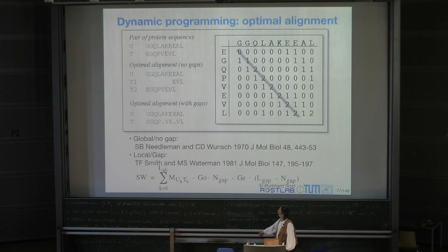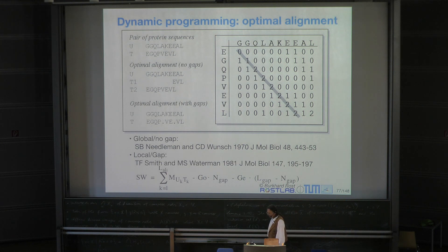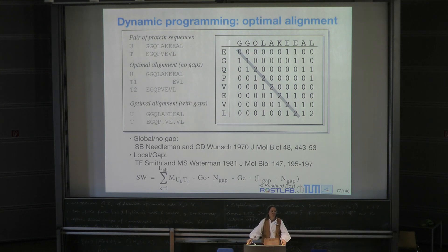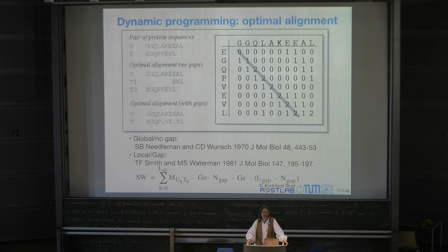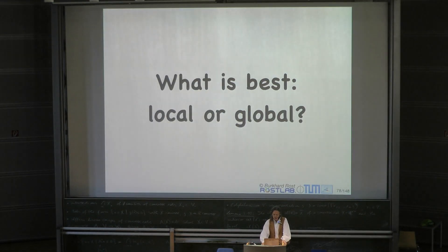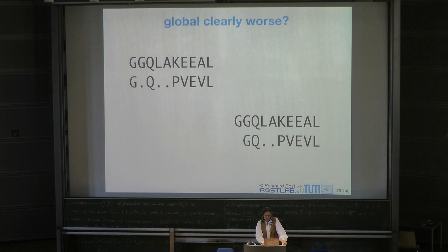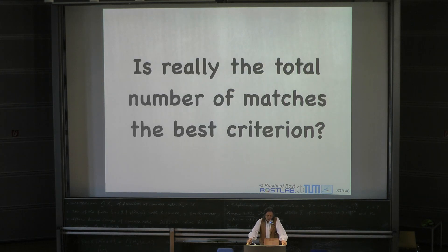That is shown in this formula. The original dynamic programming by Needleman-Wunsch was only done for global alignments. Smith and Waterman expanded that in 1981 to coin what is today called the Smith-Waterman alignment method, which does the brute-force local alignment of two sequences. Local alignment is ultimately better; global is clearly worse. The next question really is: is the total number of matches the best criterion? Protein domains are 60 to 400 residues long.